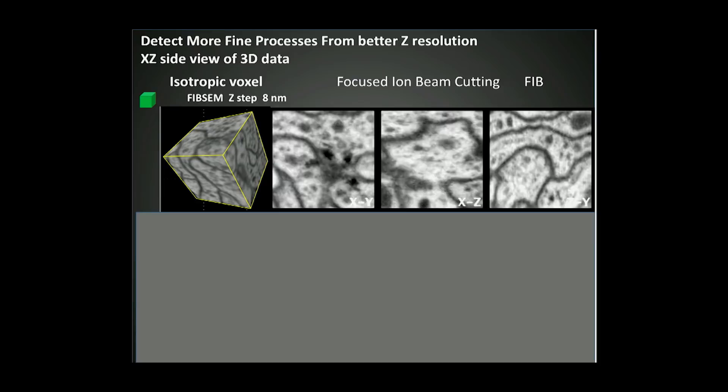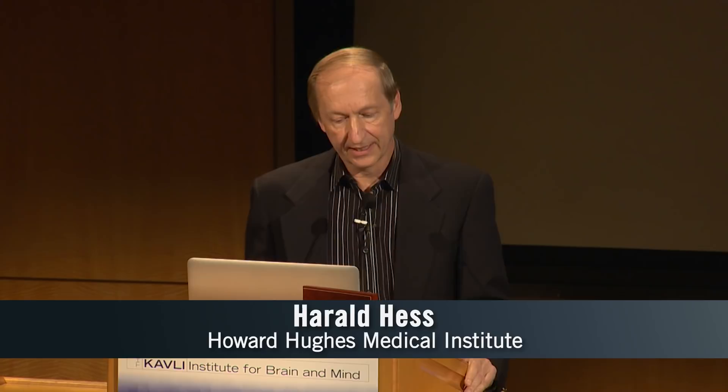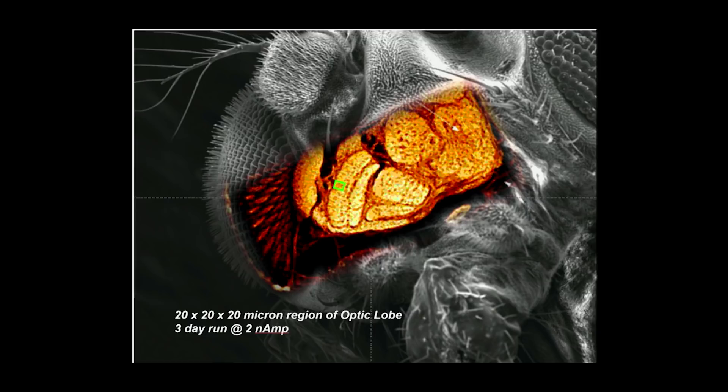So we got one of these machines and started out. We ran it, and three days later it came to a grinding halt and stopped. We had imaged one one-thousandth of a brain and couldn't continue. There were problems. So we came to this conclusion: FIB-SEM is irrelevant because it can't image anything useful. I continued to be employed and worked on the next problem.